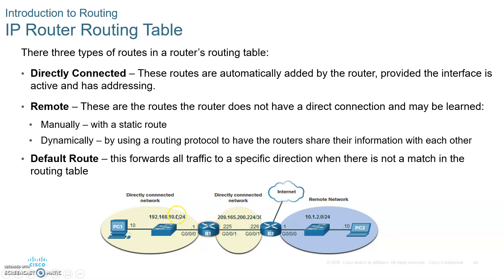The default route means every packet that comes in will be forwarded out of a specific interface no matter what. If I look up the entire routing table and there's no match, I'll fall back to the default route. So if I don't know where to send your packet, by default I send it out of whatever interface is configured as the default route.